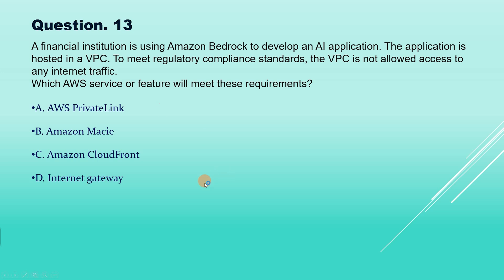The correct answer is AWS PrivateLink because it is used to securely access AWS services from a VPC without exposing traffic to the public internet. It ensures compliance with regulatory standards that prohibit internet access, as all communication happens over the private AWS network. Internet gateway also uses the public internet, so it is not beneficial here.